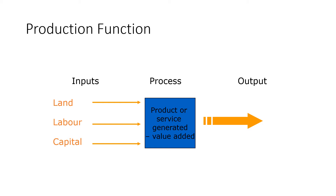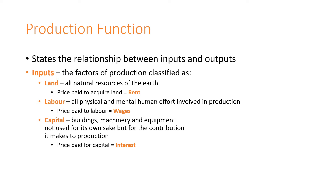The input variables that this production function consists of are mainly land, labour, and capital, which they use as variables to generate or add value to a product or service for economic output for consumption. The production function is a statement of the relationship between inputs and outputs, and these inputs are the factors of production classified as land, labour, and capital.